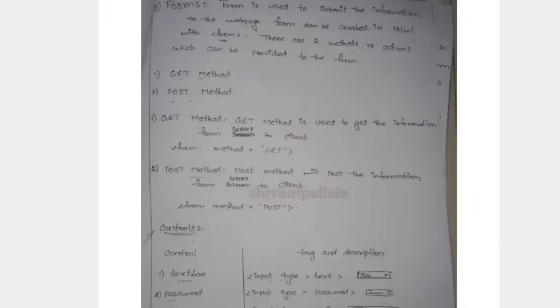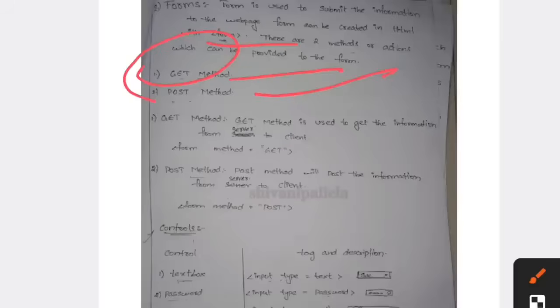Either this or second one is form and controls. A form is used to submit the information to web page. To submit information to web page we will use form tag. They will have two methods in form - get method and post method. In get method we will get the information from server to client. And post method we will post the information from server to client. We will post here, we will get the information here.